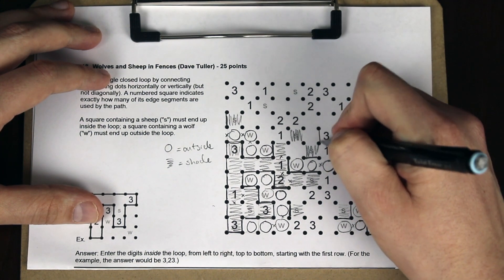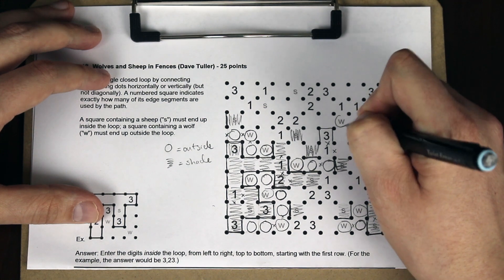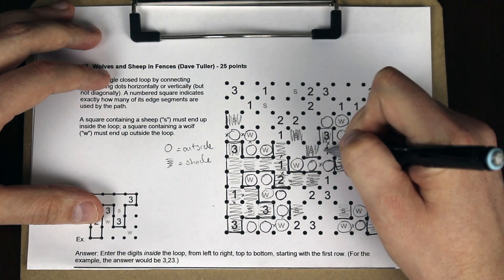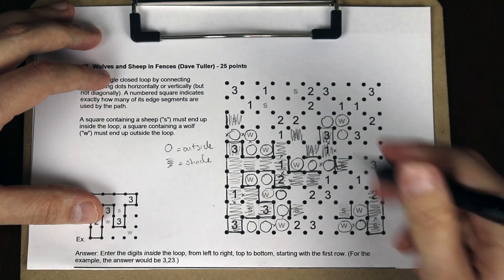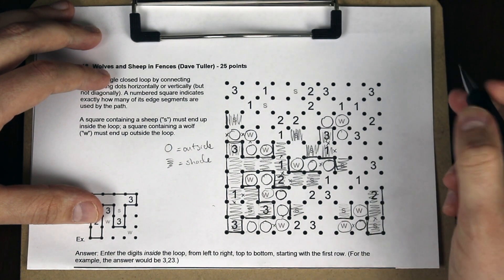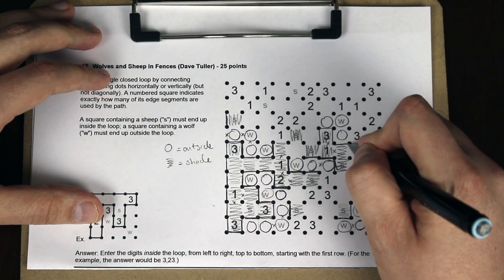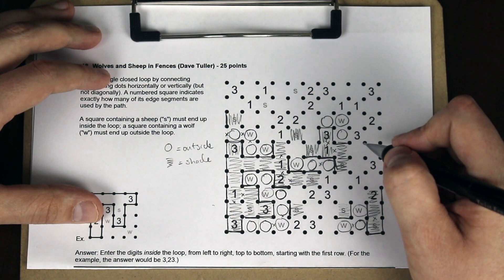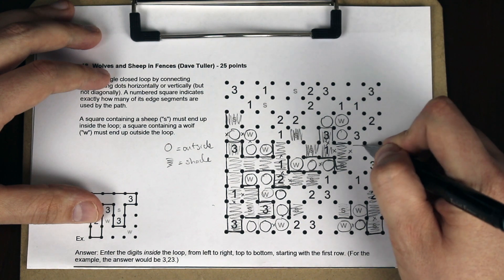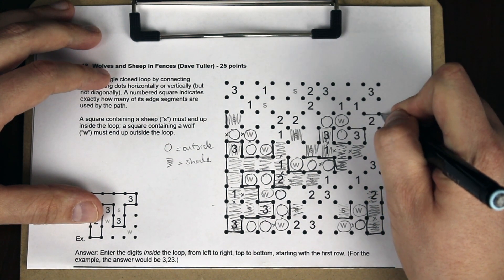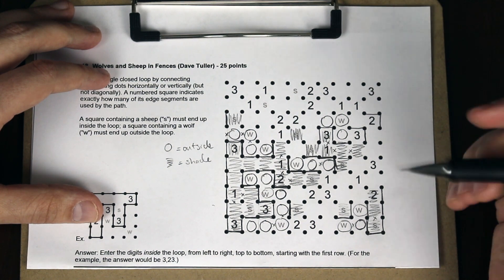That tells us the three. And with the wolf that's here, that tells us that one is shaded. So we know it has to go that way. That means this square is shaded here. This is shaded here. This three is now filled. This is all just Slytherlink logic that I covered in the previous video.